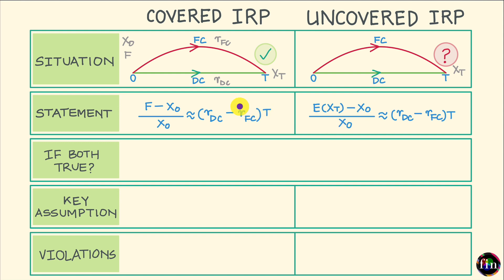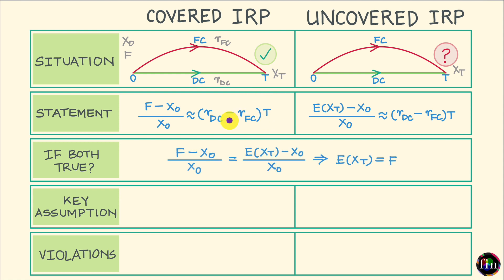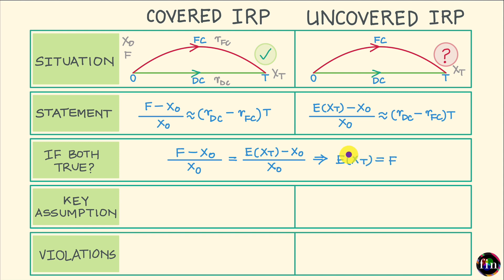This tells us that if we invest in the lower yielding currency FC, although it gives a lower rate of return than DC, exchange rates are expected to move so that the total expected return from that investment choice still matches the return from the DC investment. Given the mathematical statements of both parities side by side, if both hold true together, the right-hand sides are equal, so the left-hand sides must also be equal — meaning the expected value of XT equals the forward exchange rate observed today. Thus, the forward exchange rate becomes the best predictor of the future spot exchange rate at time T.